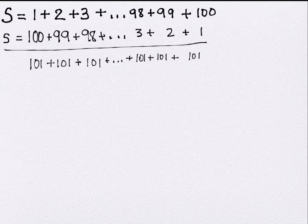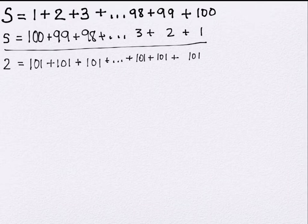On the left-hand side, S plus S equals 2S — we have simply doubled what we originally started with, adding the sum to itself to get twice as much. So we have 2S equals 101 times the number of pairs.